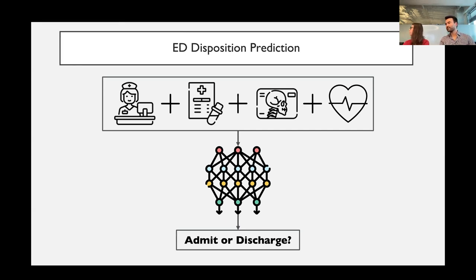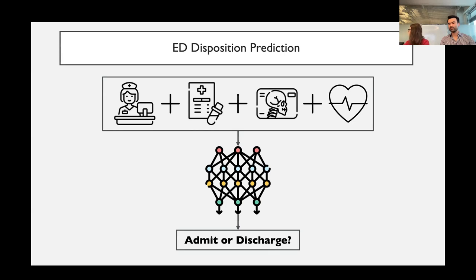Furthermore, we're trying not just to make static predictions at a single time point, but to build a model that can continuously predict throughout a patient's visit. We think this would be helpful for hospital logistics — administrators need to deal with capacity issues and allocating beds to different parts of the hospital. Just the ED disposition prediction alone, we don't think that will be particularly used by a physician to change their mind, but in a couple of slides I'll talk about how we're extending this work to make it more clinically useful.